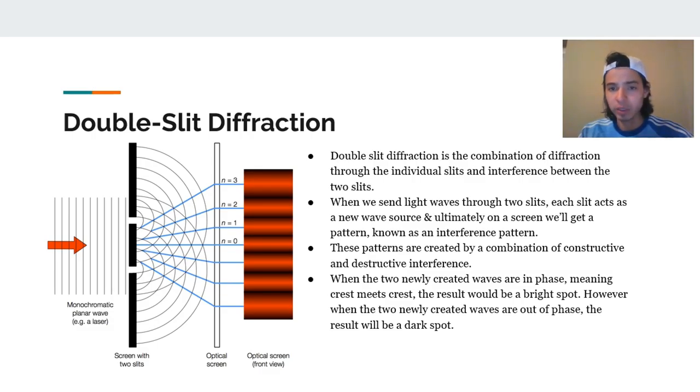So double slit diffraction is the combination of diffraction through the individual slits and interference between the two slits. When we send plane waves through two slits, for example, each slit acts as a new wave source and ultimately on the screen we'll get a pattern known as an interference pattern. These patterns are created by a combination of constructive and destructive interference.